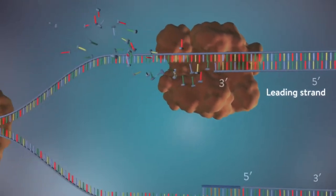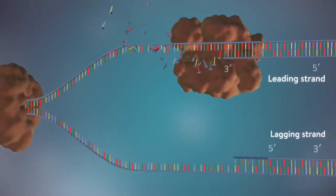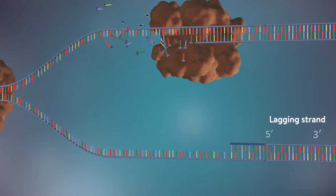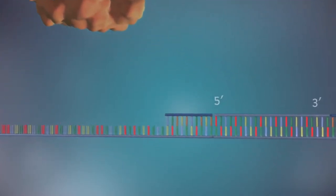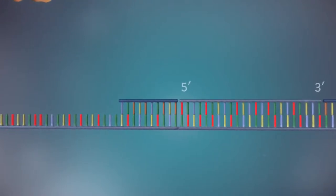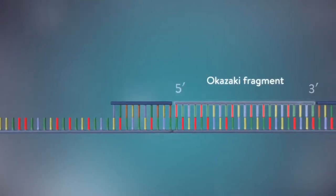The other strand, the lagging strand, cannot be made in this continuous way because it runs in the opposite direction. The DNA polymerase can therefore only make this strand in a series of small chunks called Okazaki fragments.